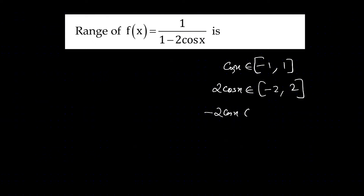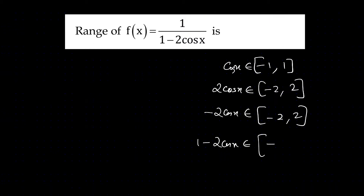Minus 2cos x lies between what and what? Minus 2 to 2. So 1 minus 2cos x lies between what and what? Minus 1 to 3.